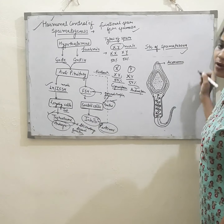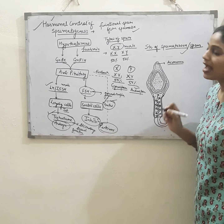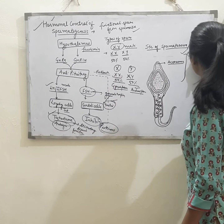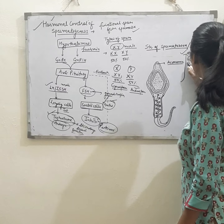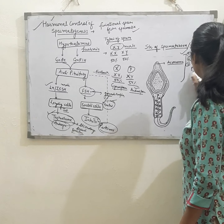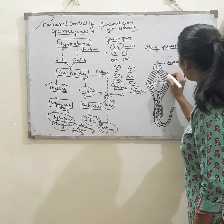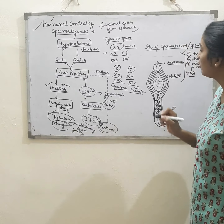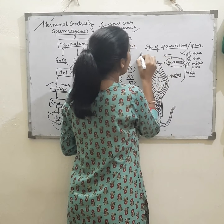Now we are going over the structure of the spermatozoon or sperm. A functional sperm has different parts: the first is the head region, the second is the neck, the third part is the middle piece, and the last one is the tail region. The head comprises the acrosome and the nucleus. The acrosome contains loads of hydrolytic enzymes.